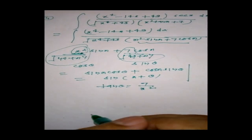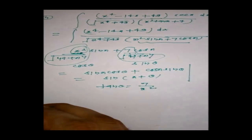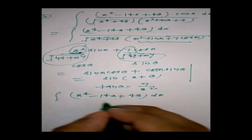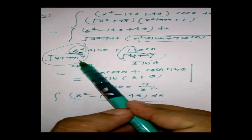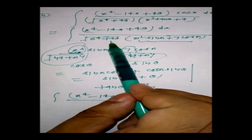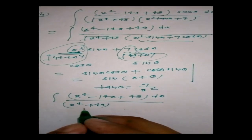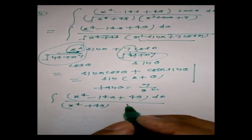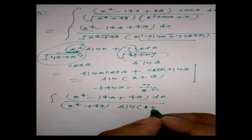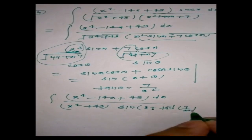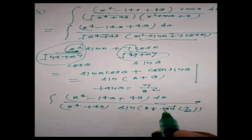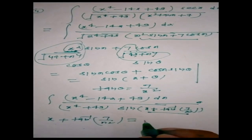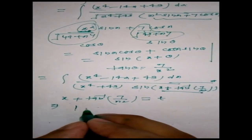The terms cancel and we get tan θ = 7/x², i.e., θ = tan⁻¹(7/x²). Now the integration becomes integral of (x⁴ minus 14x plus 49) divided by (x⁴ + 49) times sin(x + tan⁻¹(7/x²)) dx. We substitute t = x + tan⁻¹(7/x²).